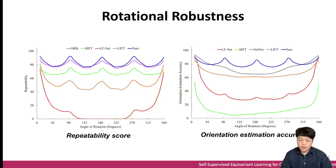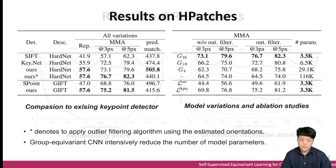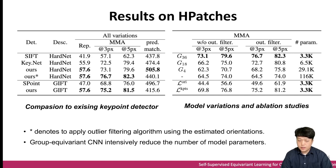These figures show the rotational robustness under synthetically rotated images. Our key point detector finds more consistent regions compared to existing classical and learning-based key point detectors. These tables show the results on key point matching with planar homography. In the left table, our method achieves the best score compared to SIFT, SuperPoint, and KeyNet key point detectors. In addition, our model with the online filtering algorithm using the predicted orientations improves matching accuracy, denoted by ours with star. In the right table, our design choice of the 36th order of the group shows the best performance with the smallest number of parameters.